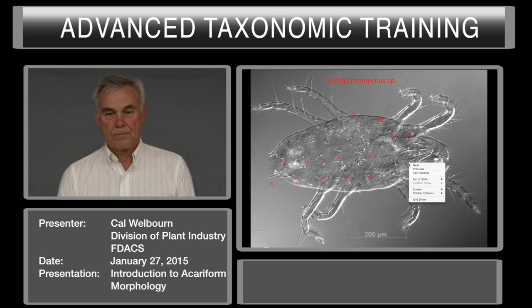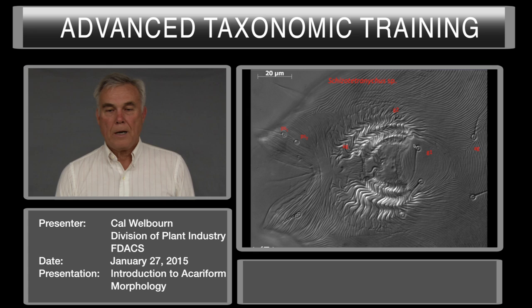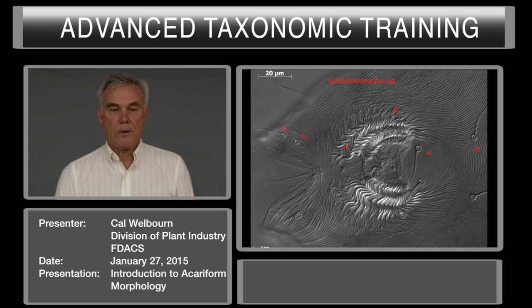Looking at a ventral view with the anterior end of the mite on the right side of the slide: we have adgenitals, then one pair and two pairs of genitals. PS are two pairs of pseudoanal setae. Note that one label got misplaced on the slide.